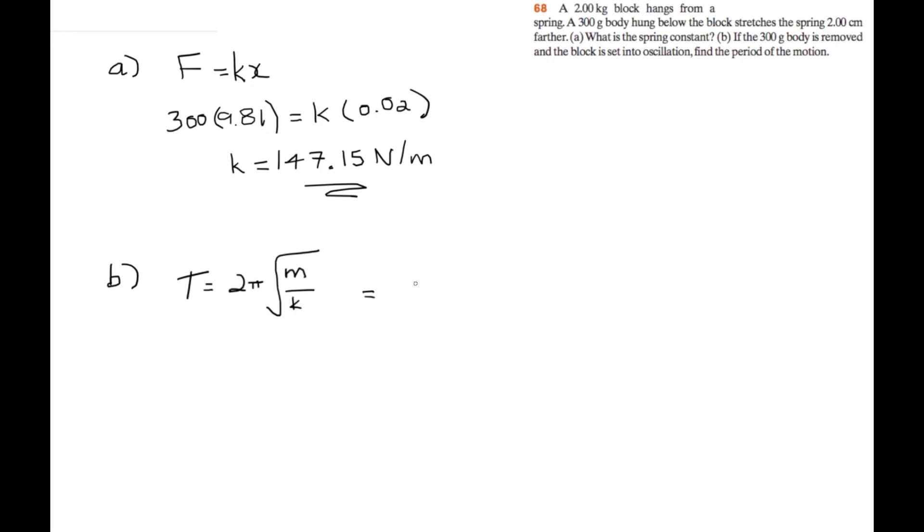this is equal to 2 pi, square root of 2 over K, which is 147.15. And this gives us a period of 0.73255 seconds.